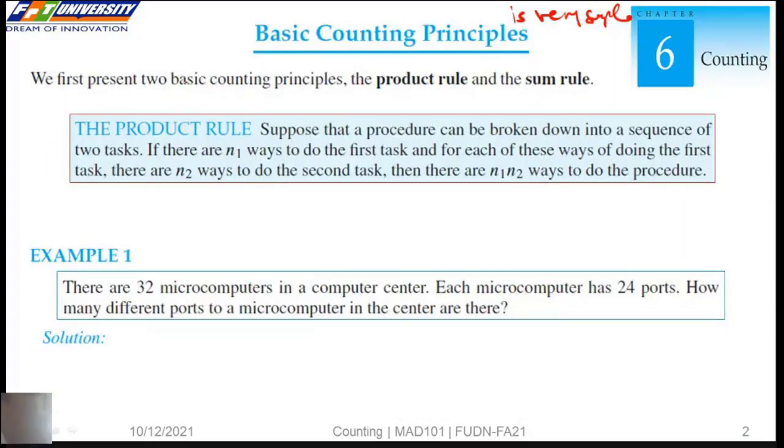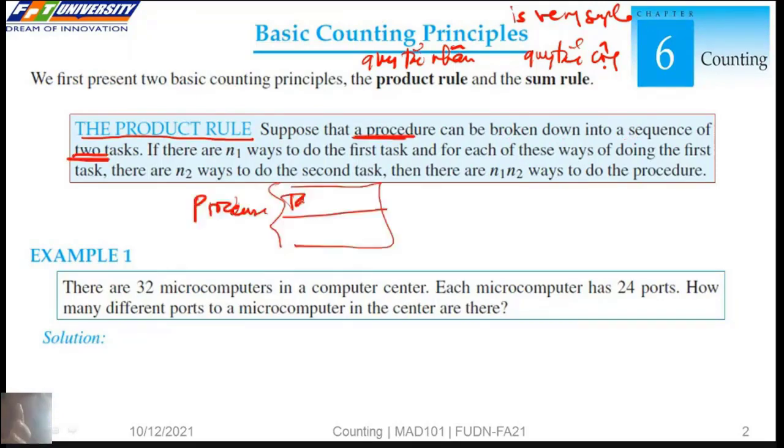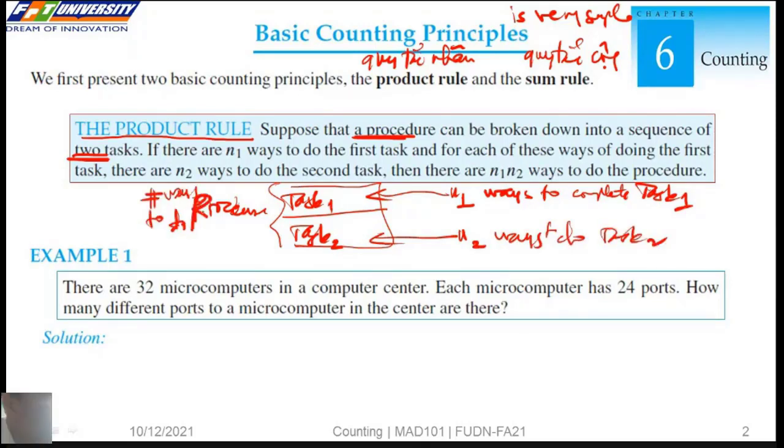We first present two basic counting principles: the product rule and the sum rule. So we assign the product rule. Suppose that a procedure can be broken down into a sequence of two tasks, task one and task two. We have N1 ways to complete task one and N2 ways to do task two. So we have N1 multiply N2 ways.